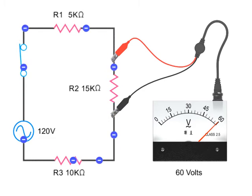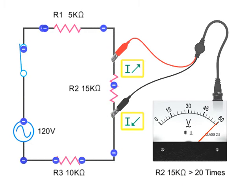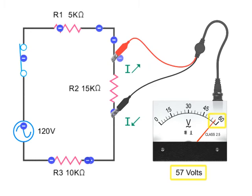If the voltmeter's internal resistance is less than 20 times the component's resistance, current will flow out of the circuit into the meter, resulting in an inaccurate voltage reading.